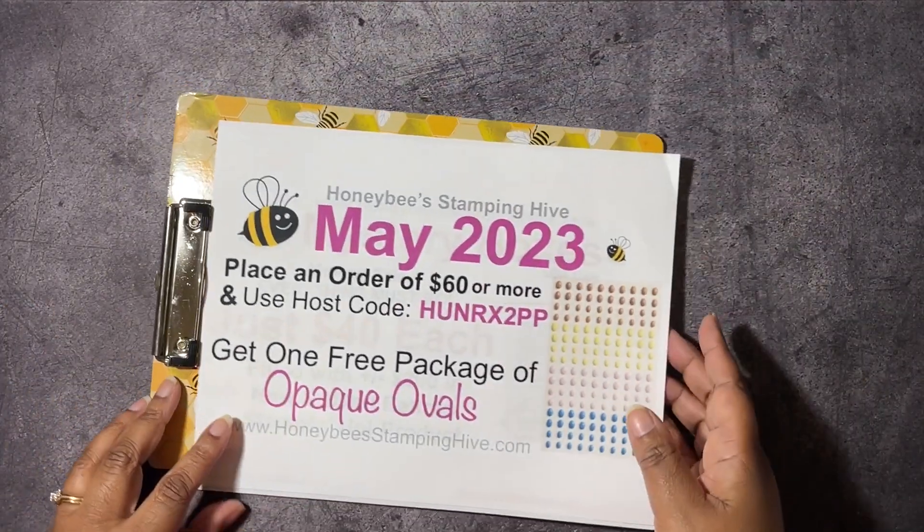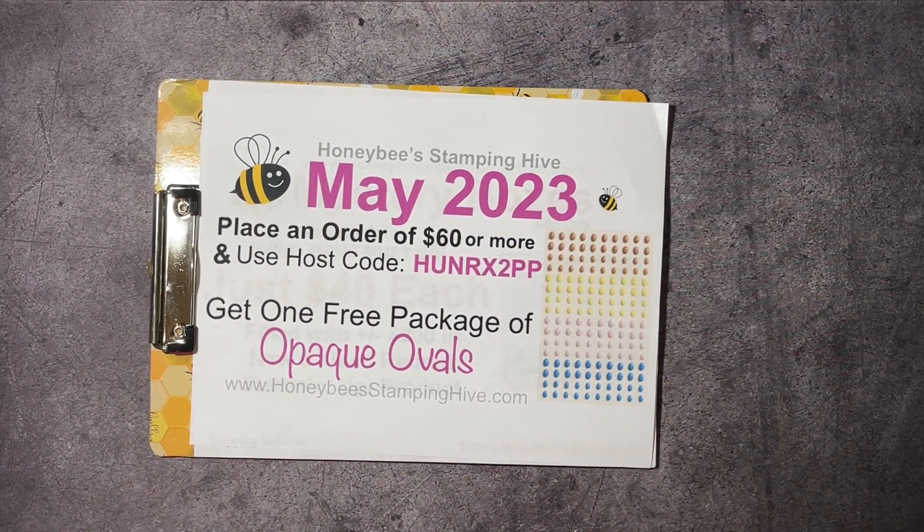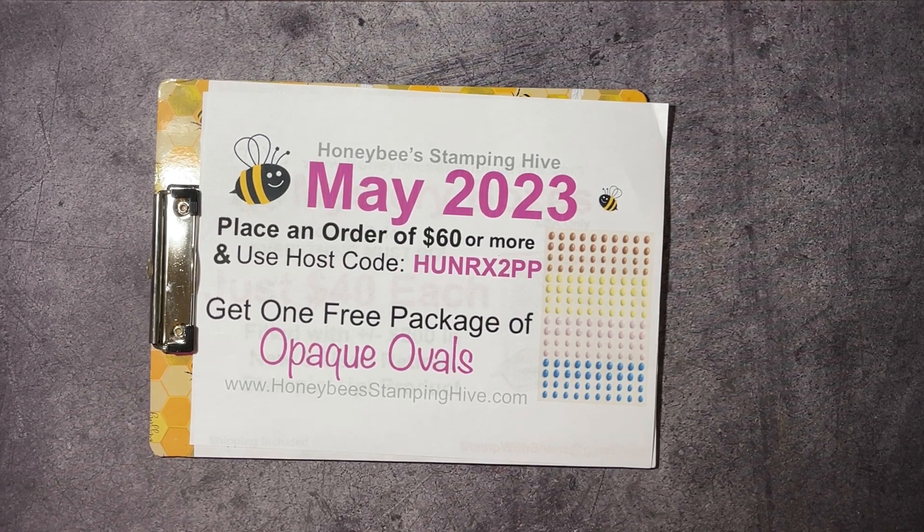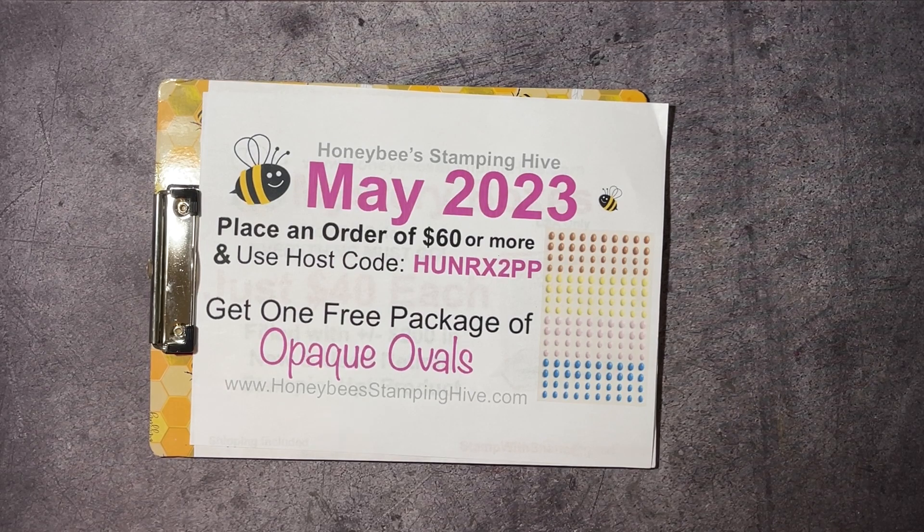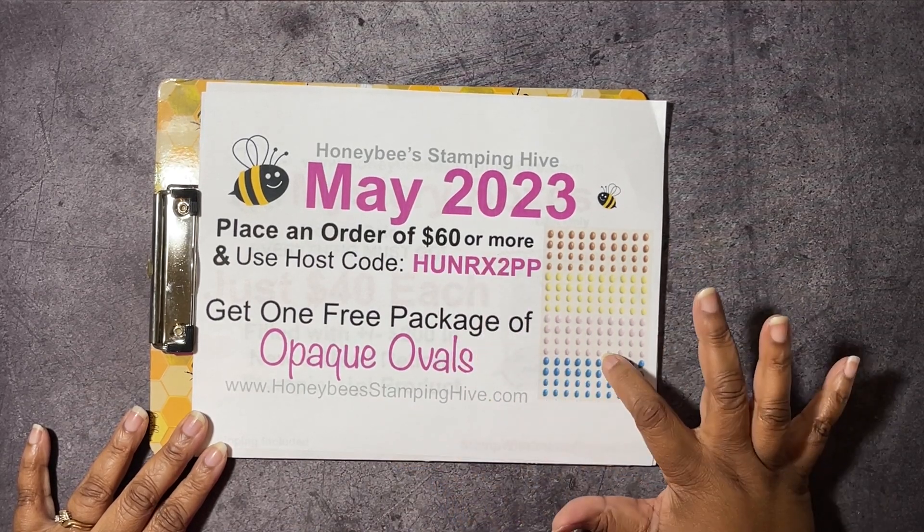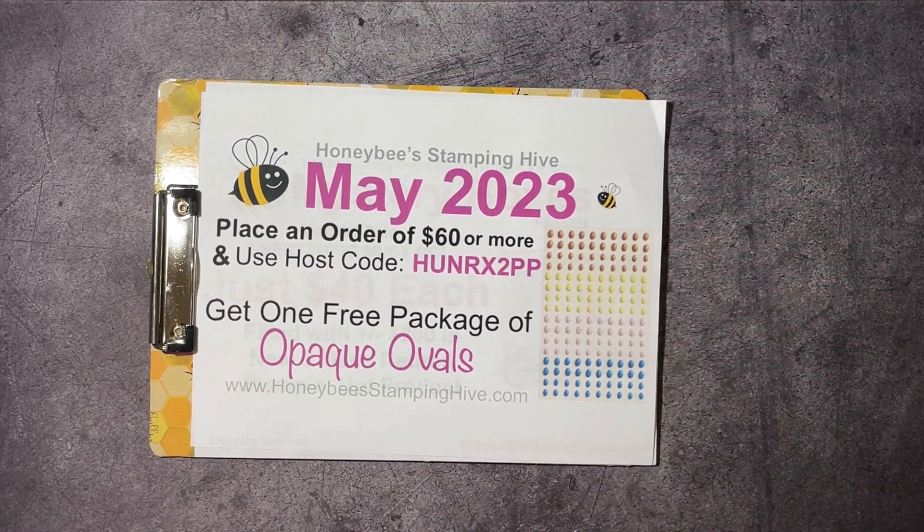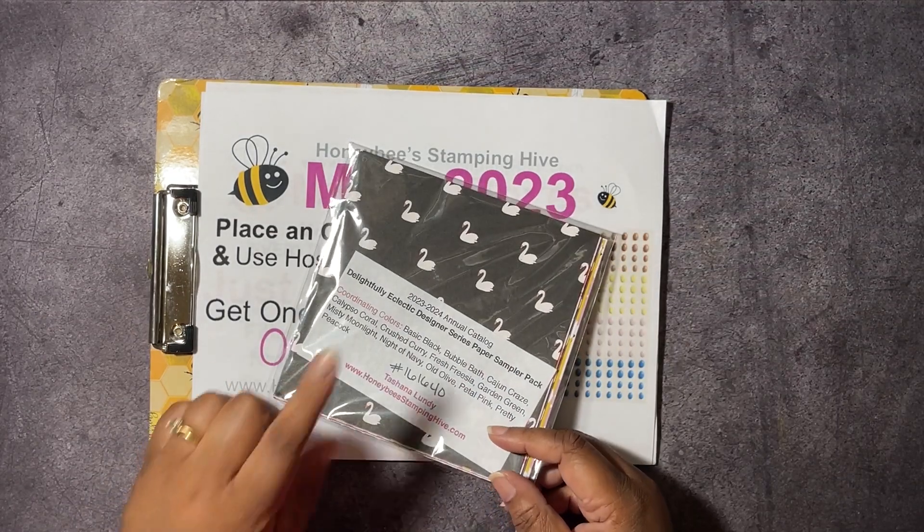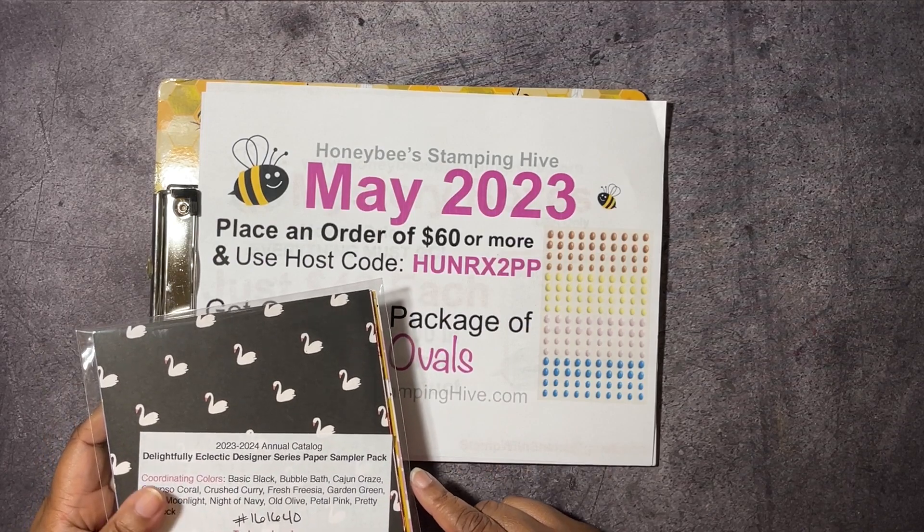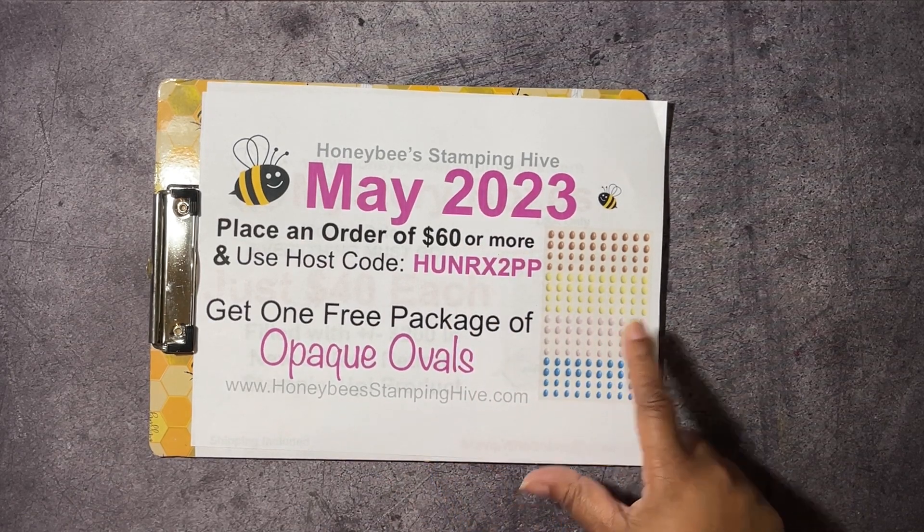Next up, we have our May host code for 2023 at Honeybee Stampin' Hive. This is the code I would like for you to use whenever you're placing an order with me. Unless your order is $150 or more, do not use this host code because you'll qualify for Stampin' Rewards, and Stampin' Rewards equals free products from Stampin' Up!, and we don't want you to miss out on that. However, if you place an order of $60 or more using this host code, you will receive a free package of the opaque ovals from me at Honeybee Stampin' Hive. If your order is $75 or more, I'm going to go ahead and throw in the Delightfully Eclectic Designer Series Paper Sampler Pack, but you still need to use that host code. You'll get both of these at a $75 purchase or more. $60, you're just going to get the opaque ovals.